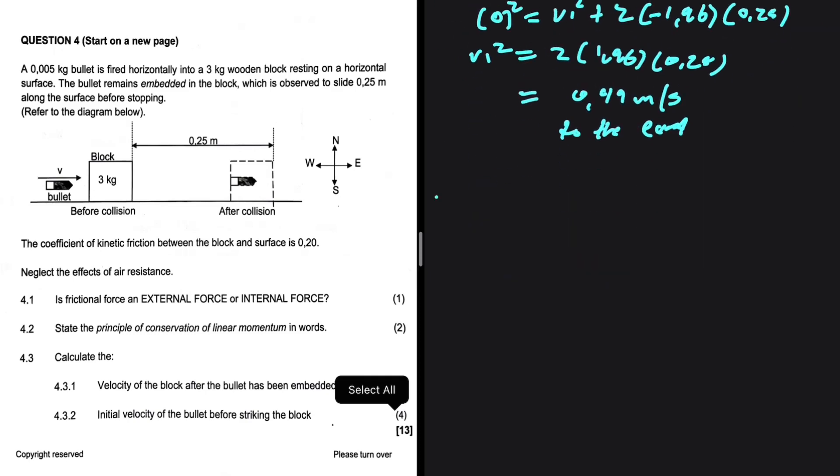Let's move to 4.3.2. Initial velocity of the bullet before striking the block. Before striking, there is no frictional force because we are told that we can neglect the effects of air resistance. So we can say that the sum of the momentum before will be close to the sum of the momentum after.